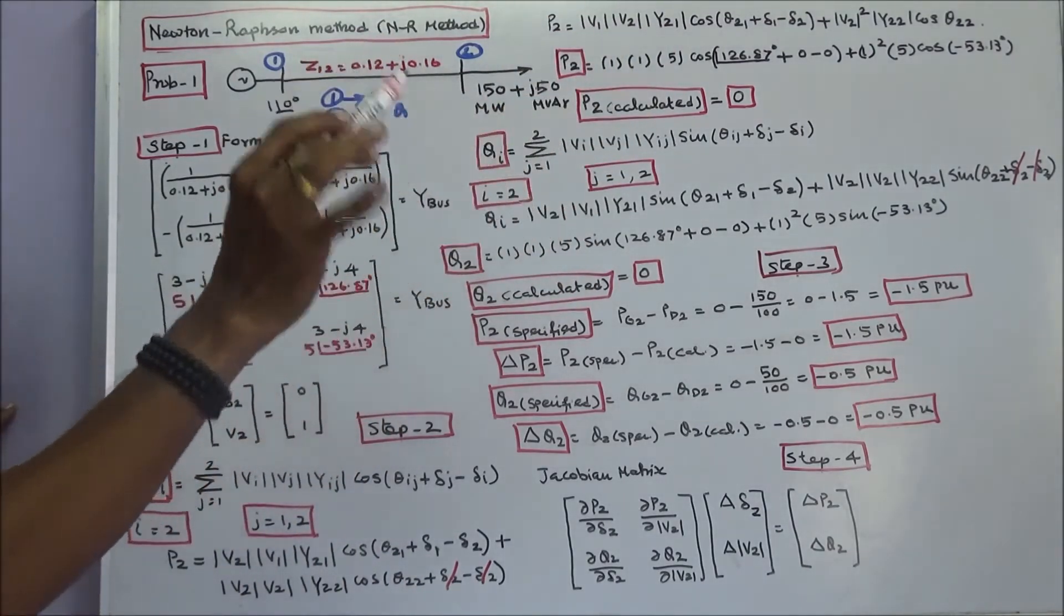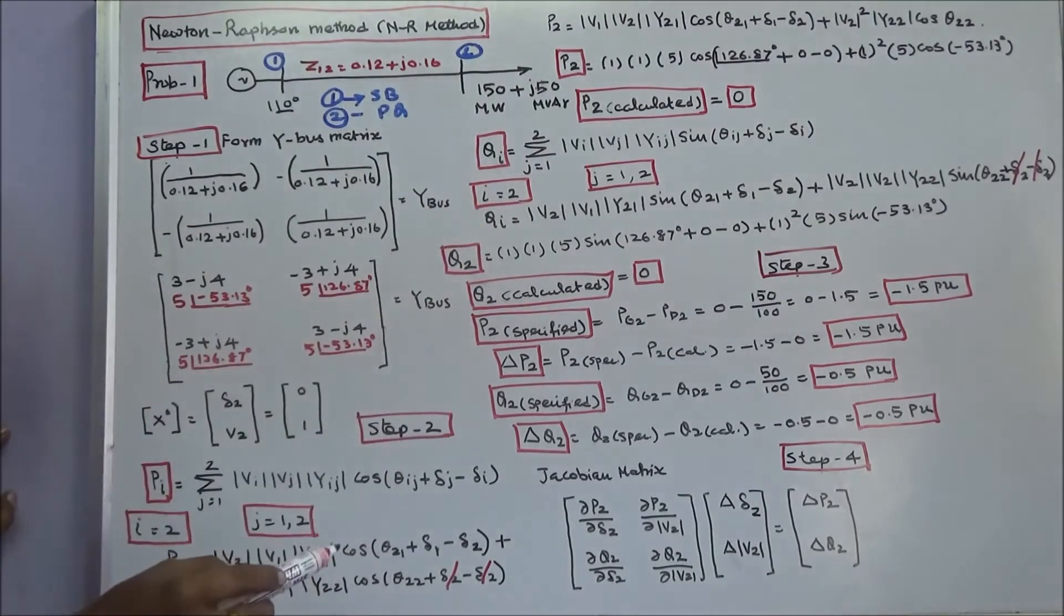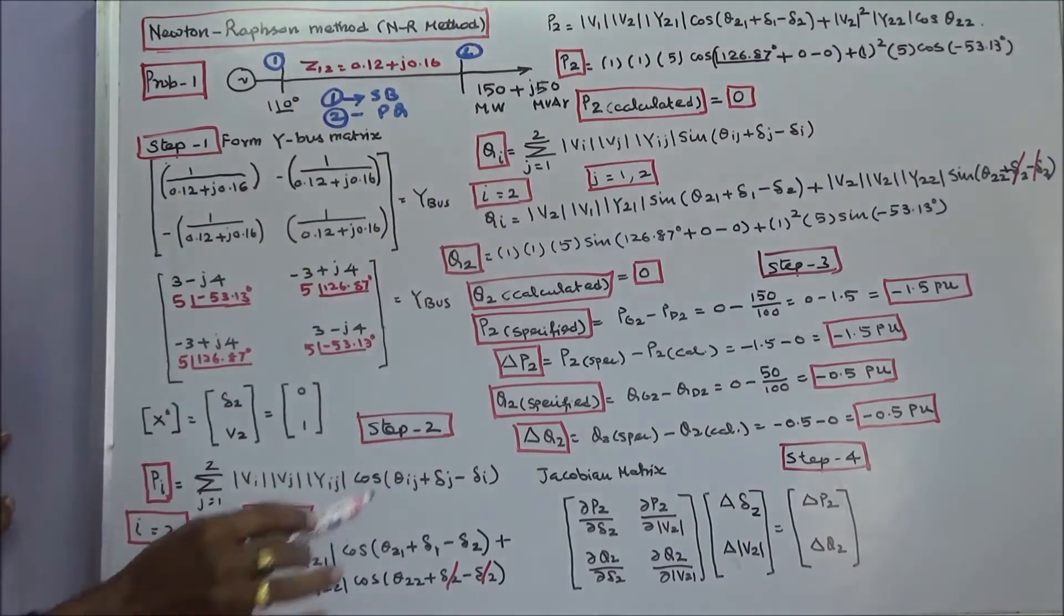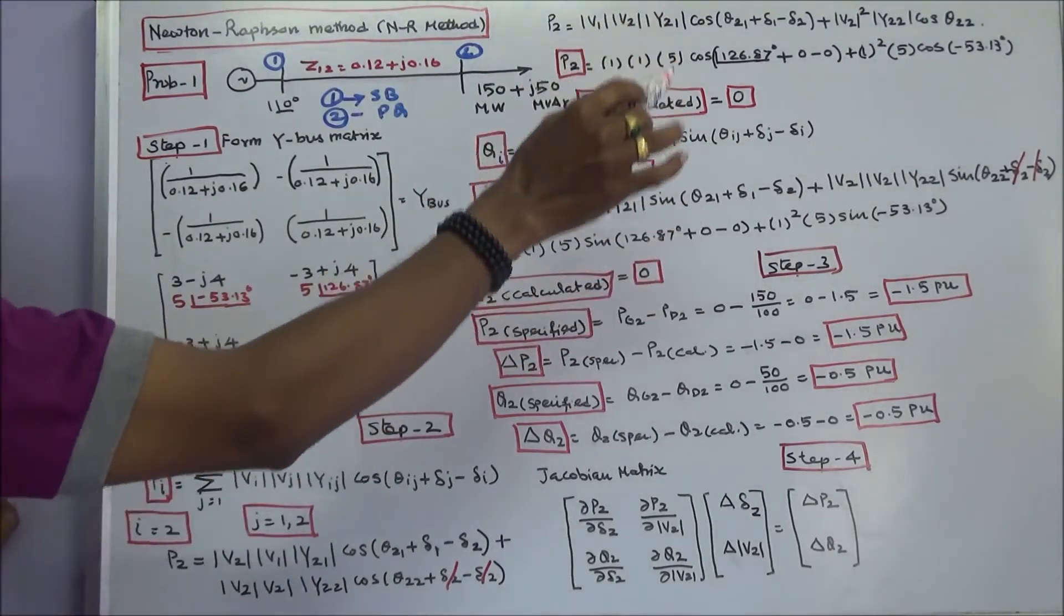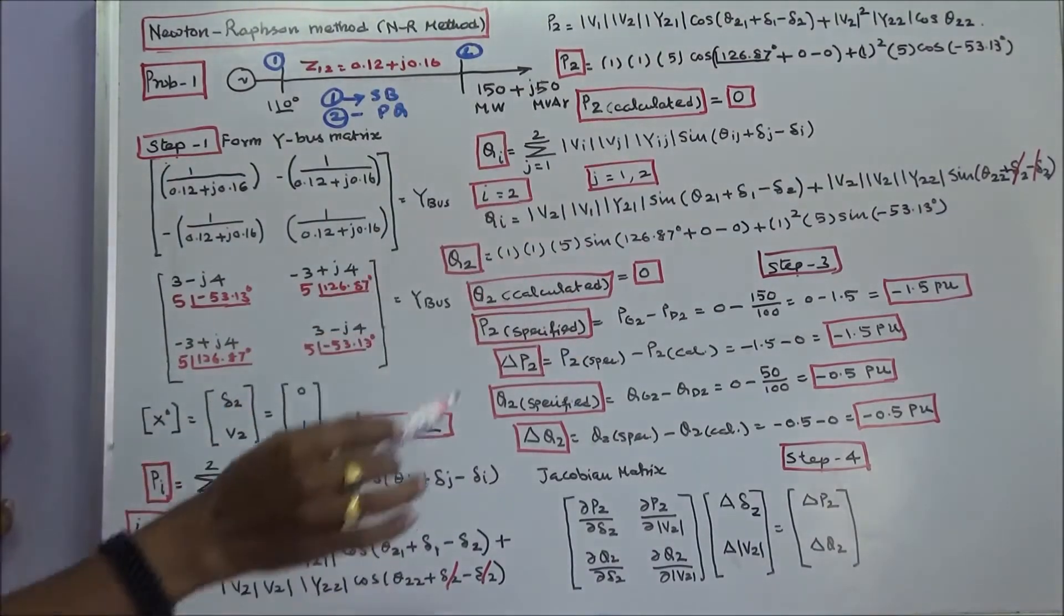Calculated P2 value is 0. Similarly, we know the general formula of Qi. Here i equals 2, j equals 1,2. Expand the equation, substitute all the values. Calculated Q2 value is 0. Step 3.